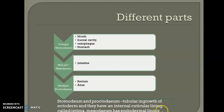So the midgut has endodermal lining, while the stomodeum and proctodeum develop from the ectoderm and hence they have a cuticular lining. That is the difference between the three.